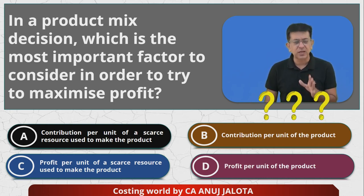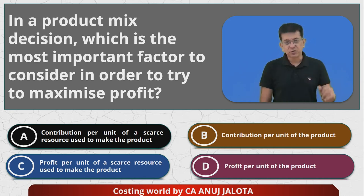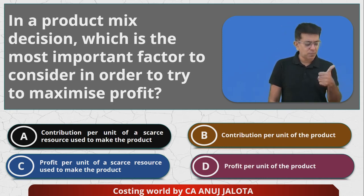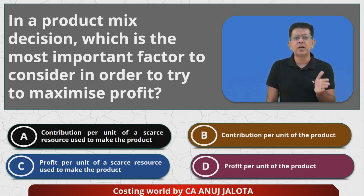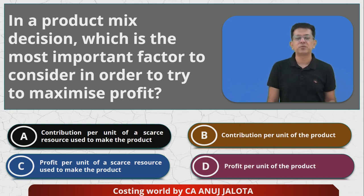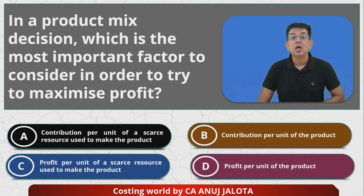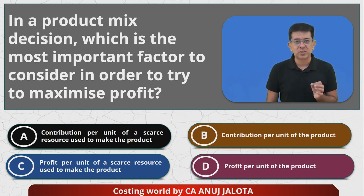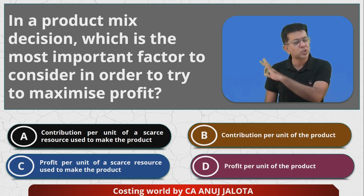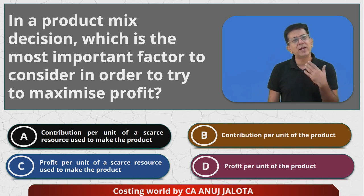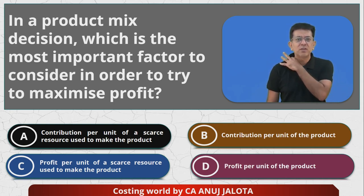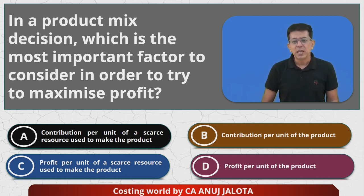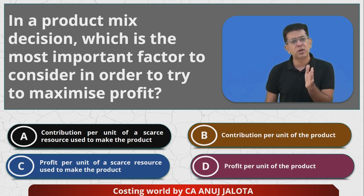Think it over, pause the video, and comment with the logic or just the answer. Suppose you had to make products X1, X2, X3 but had a limited number of machine hours. Which product should be produced first? The one that uses machine hours to the best — giving you the highest contribution per machine hour. If labor hours were the limiting factor, produce that product first which gives the highest contribution per labor hour. If raw material in kgs is the limiting factor, produce the product giving the highest contribution per kg.